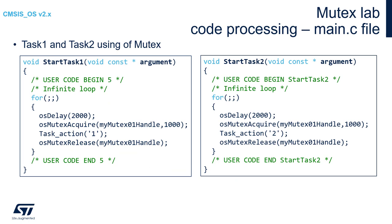Please locate the StartTask1 function and place the following code within its endless loop. At the beginning, add OSDelay with argument 2000. To avoid spamming the single-wire viewer, this line will send the task to blocked state for two seconds. As a result, we will see output on the single-wire viewer every two seconds. The next line is OSMutexAcquire with two arguments: the first is the mutex handler, and the second is a timeout set to 1000ms. This function will wait for the mutex for a maximum of one second, remaining in a blocked state.